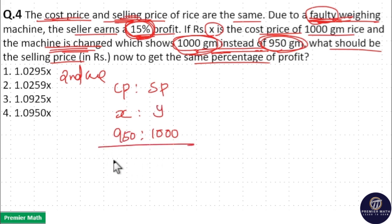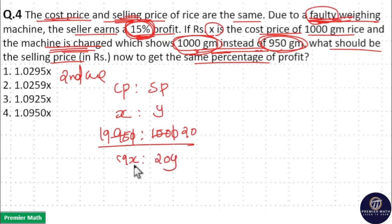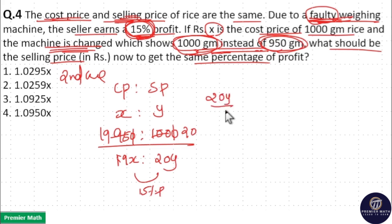Now take the ratio. 5 goes 20 times in 100, and 5 goes 19 times in 95. So this is equal to 19X and 20Y. The sell price and cost price ratio is 19X to 20Y, and this is equal to 15% profit. So 20Y divided by 19X is the sell price to cost price ratio, and this should be equal to the 15% profit ratio.